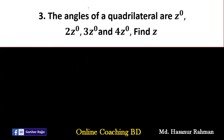Number 3 says: the angles of a quadrilateral are x degrees, 2x degrees, 3x degrees, and 4x degrees. Find x. That is a very simple one. We just add all 4 angles and set the sum equal to 360, then simplify to find the value of x.